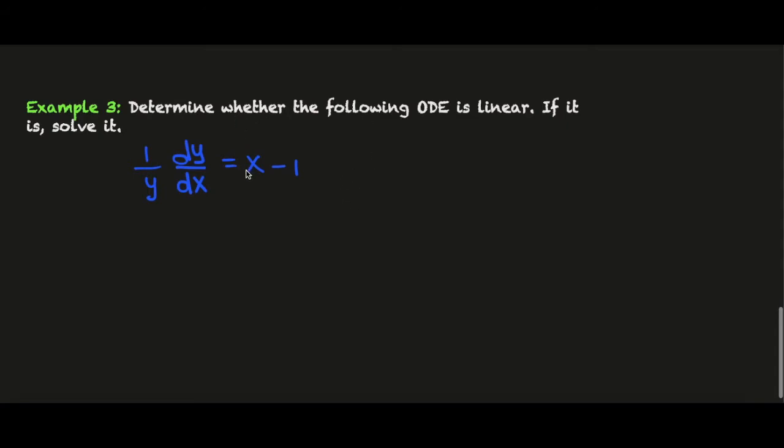Let's look at a further example: determine whether the following ODE is linear, if it is solve it. So at the moment there's a 1 over y here, but what I can do is multiply everything through by y and I'd get y' = xy - y, and I could do better and write y' - xy + y = 0, and this can be further simplified to y' + y(1 - x) = 0.